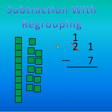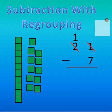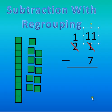Now, instead of having 1 in my ones place, since I brought 10 over, I have to add 10 to whatever number was in my ones place. Since there was 1 there before, 1 plus 10 is 11. Let me count just to make sure: 1, 2, 3, 4, 5, 6, 7, 8, 9, 10, 11.